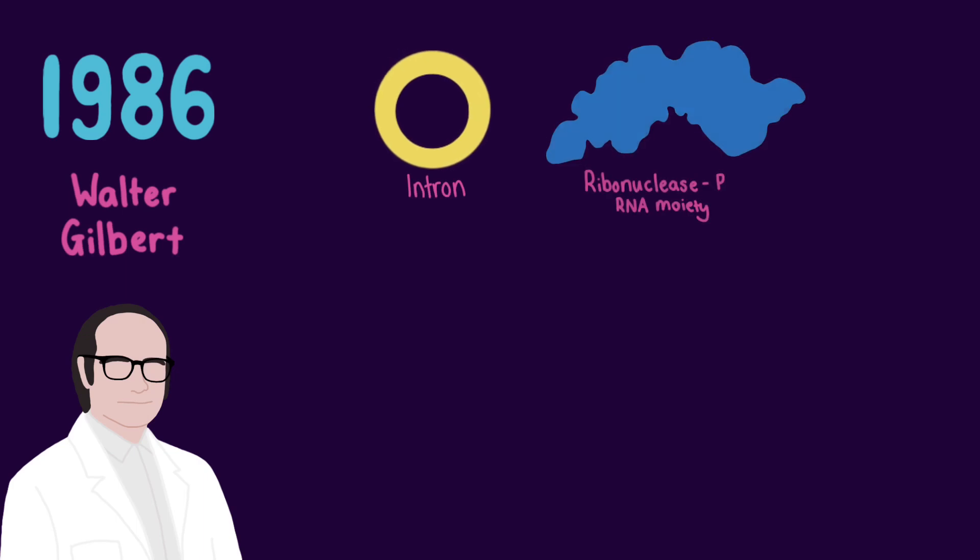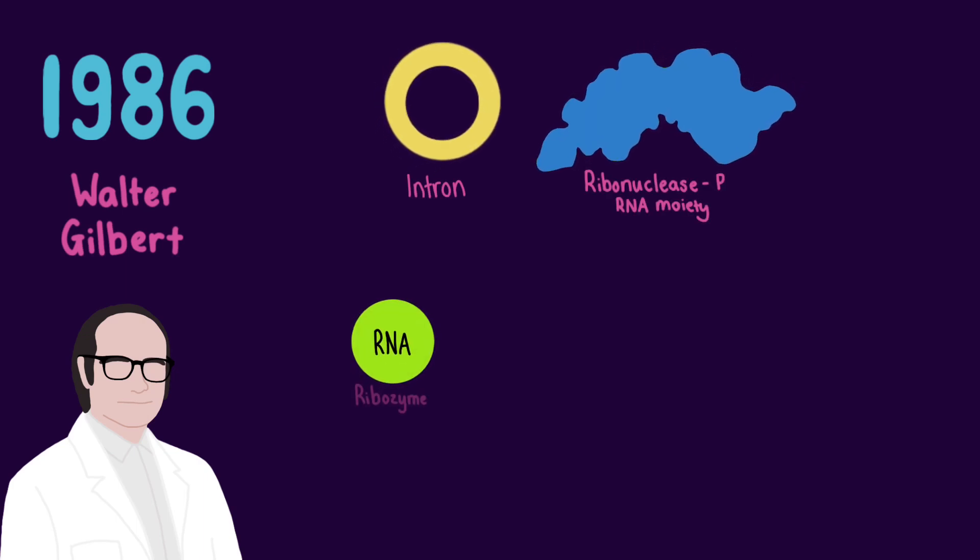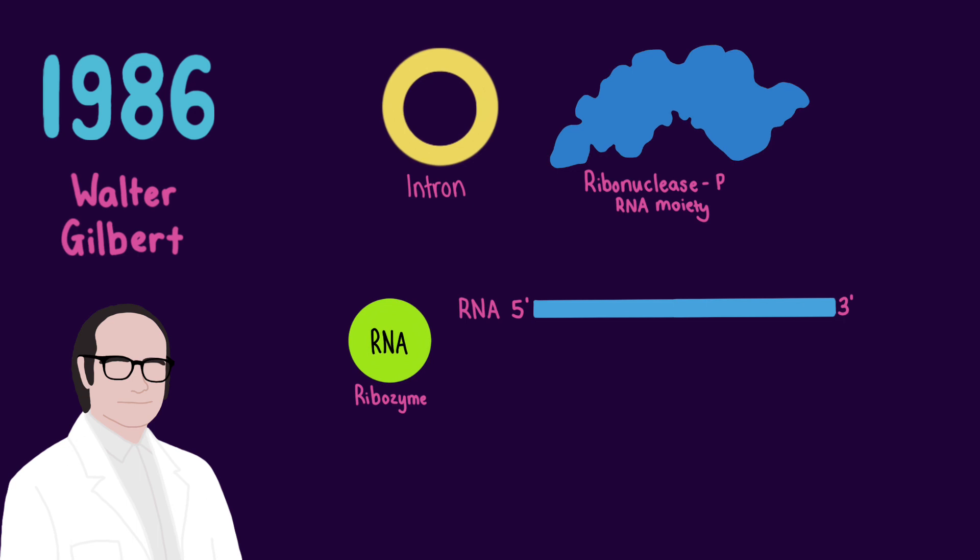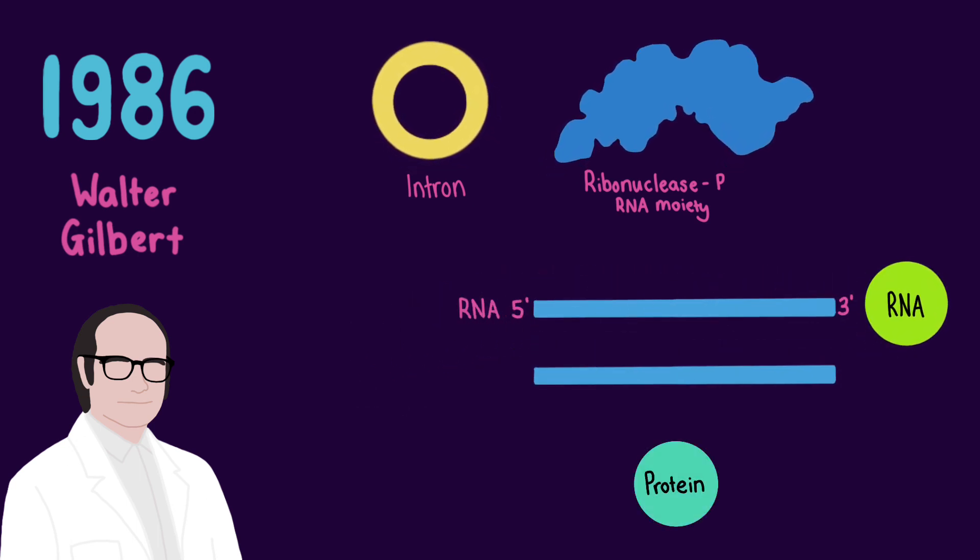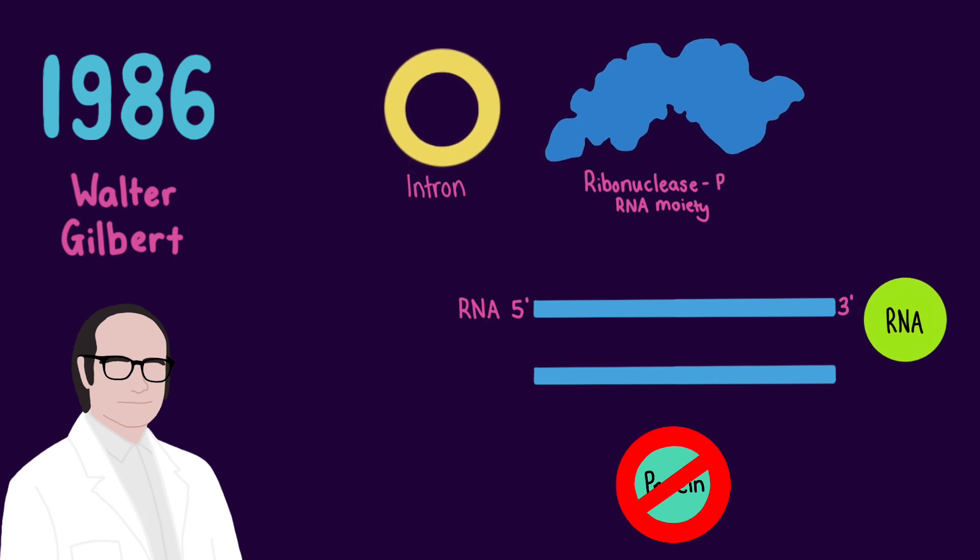Given the identification of these two ribozymes, Gilbert suggested that an RNA molecule capable of catalyzing the synthesis of new RNA molecules may have existed in the RNA world, thus eliminating the need for protein enzymes at the beginning of life.